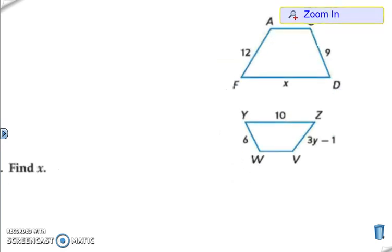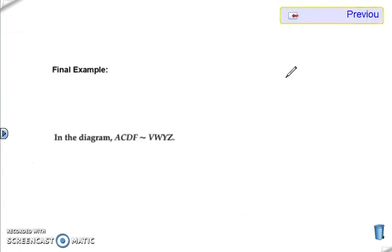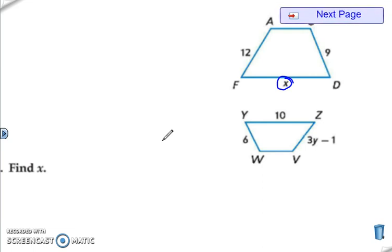So if I am looking for x, x goes between F and D. If I look at that similarity statement, DF is proportional to YZ. So that means the x matches up with the 10. So now I need two other corresponding sides.